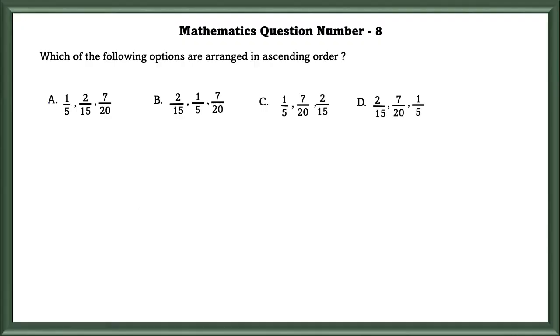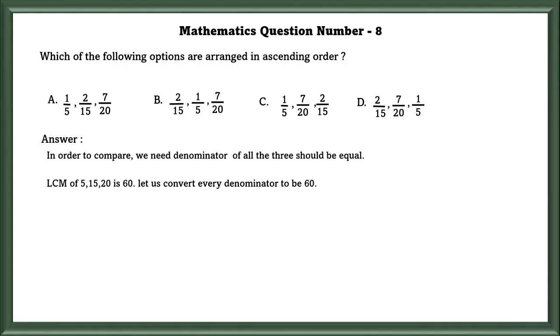Mathematics Question No. 8: Which of the following options are arranged in ascending order? In order to compare, we need the denominators to be the same. In order to make the denominator equal, we need to find the LCM. LCM of 5, 15, 20 is equal to 60. Let us convert every denominator to be 60.